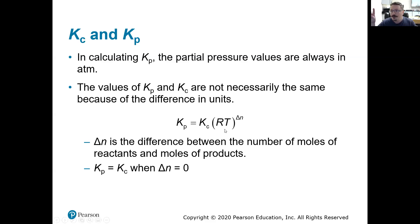If they're identical, if we start with two moles of gas on the reactant side, and we end with two moles of gas on the product side, then delta N would be zero. RT raised to zero is one. So Kc times one is just Kc. So you can see these would be identical.